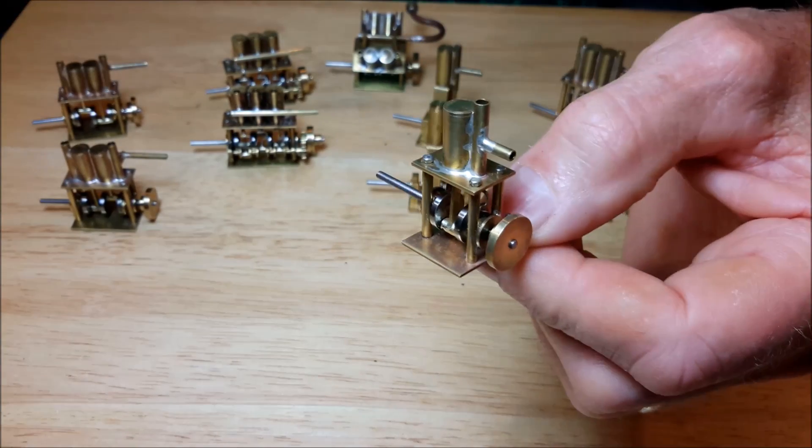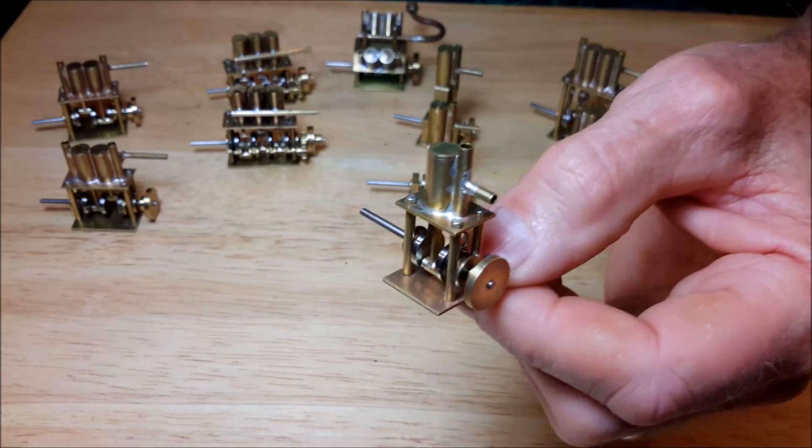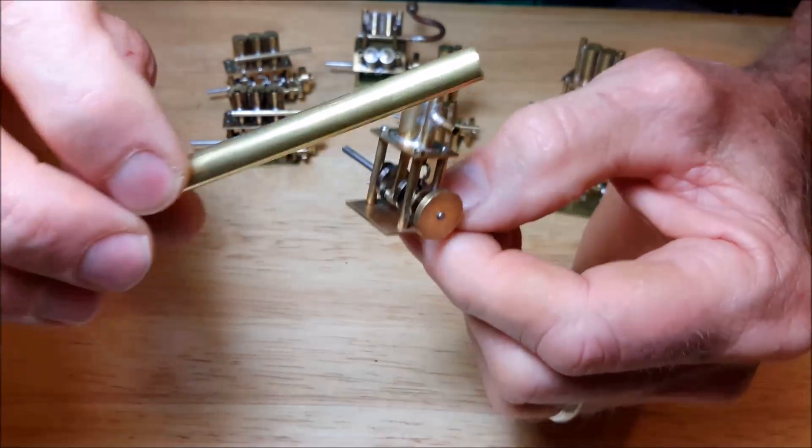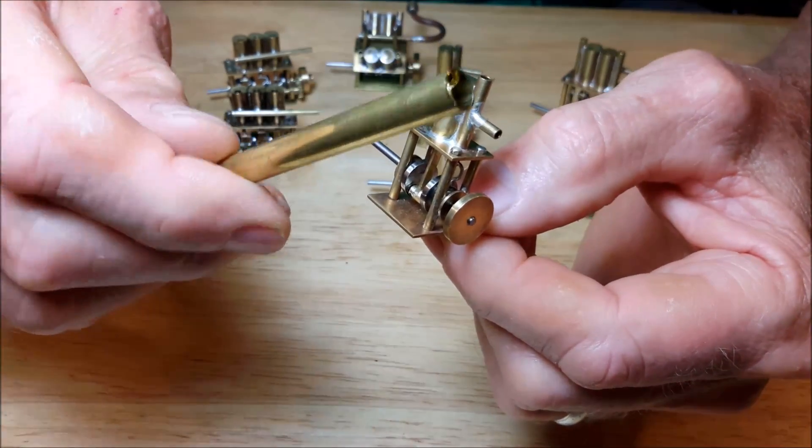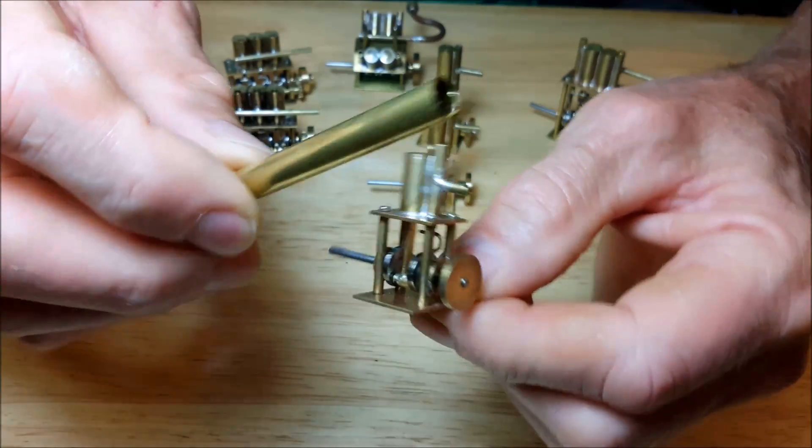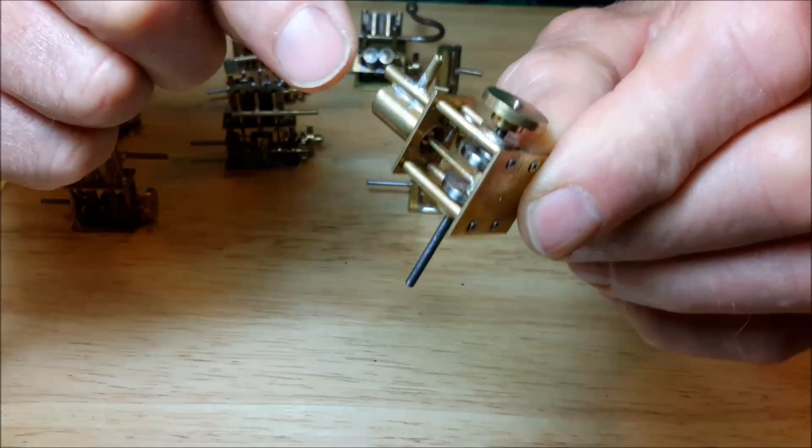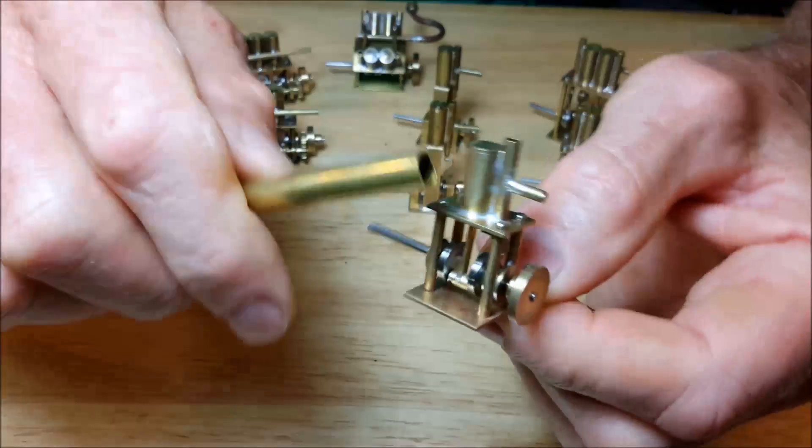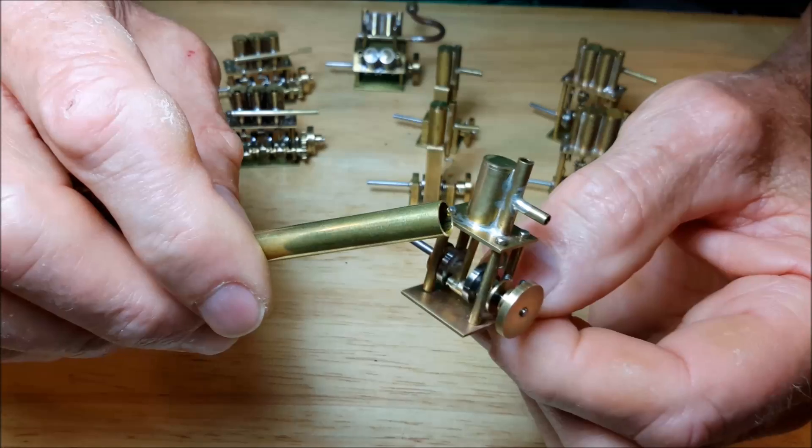They're very inexpensive and easy to make, partly because they're built from hobby tubing. The cylinders are built from 9/32 inch hobby tubing and the valves are 1/8 inch hobby tubing which have a very smooth interior.